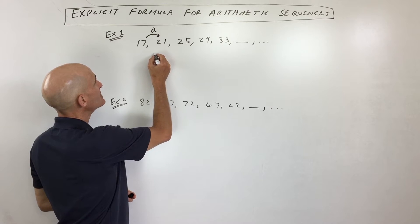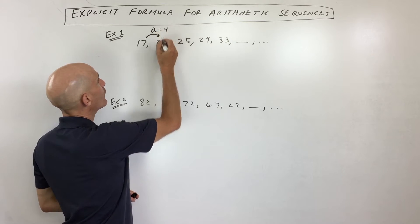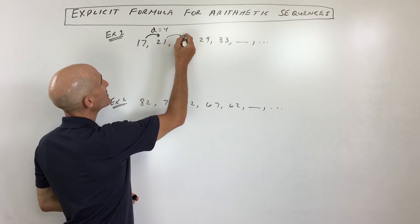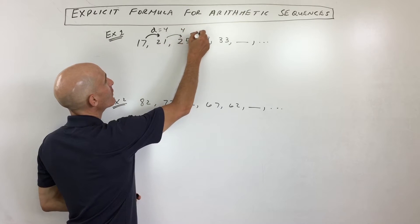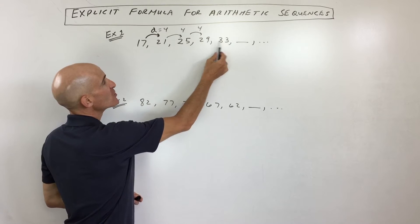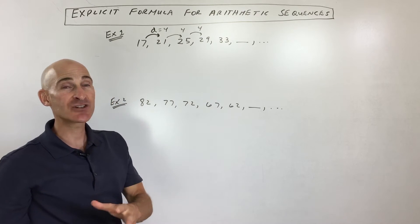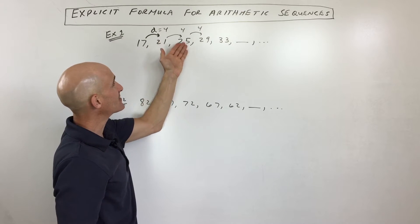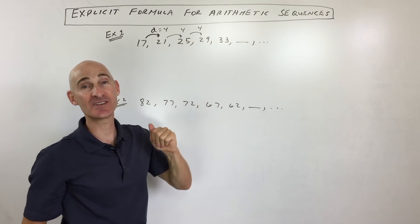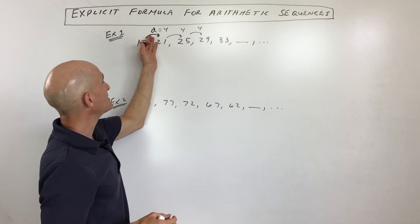If you take 21 minus 17, what do you get? 4. If you take 25 minus 21, what are you getting? 4. If you take 29 minus 25, what are you getting? 4. So what you can see is that common difference is actually what we're adding to get to the next term in the list or in the sequence. So that's why they call it d for difference.